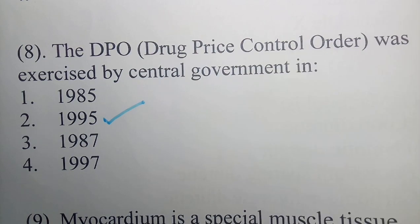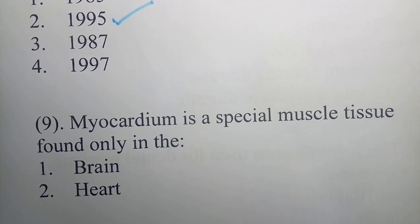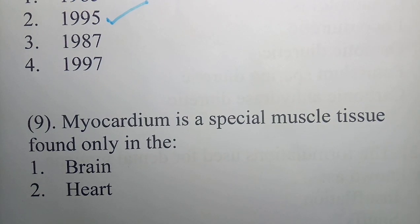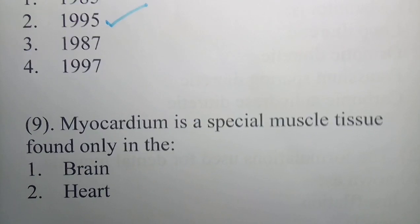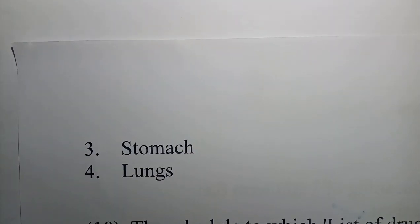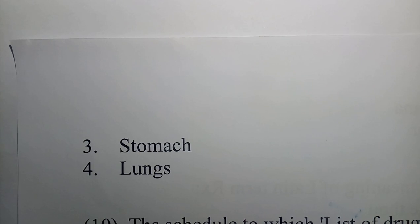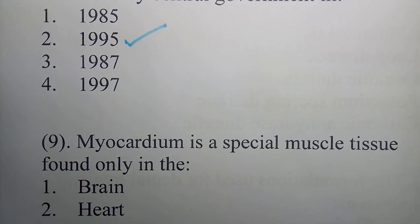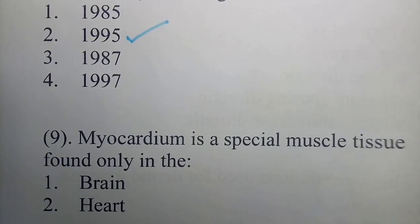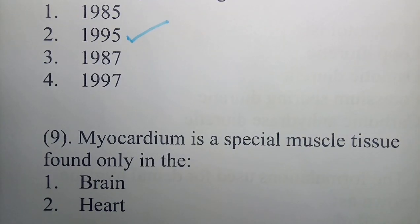Question 9: The myocardium is a special muscle tissue found only in the - options are brain, heart, stomach, and lungs. The correct answer is option 2 - heart. Myocardium is a special muscle tissue found only in the heart.